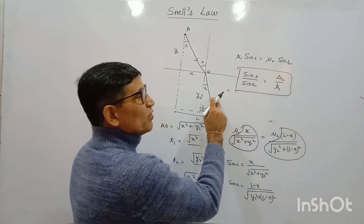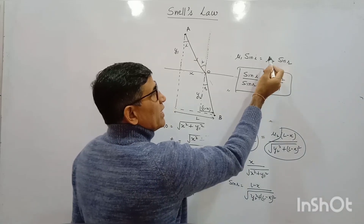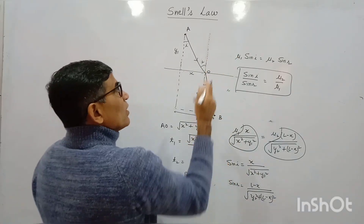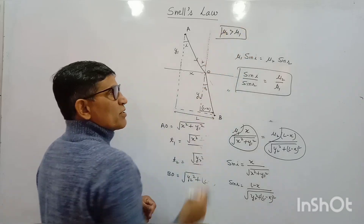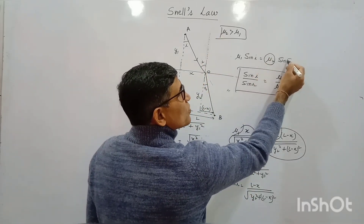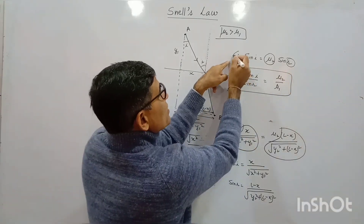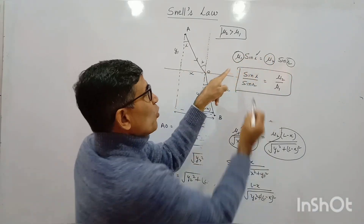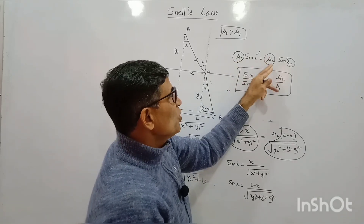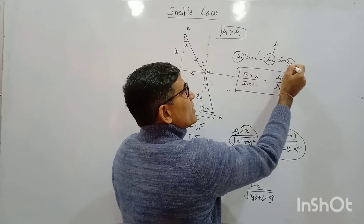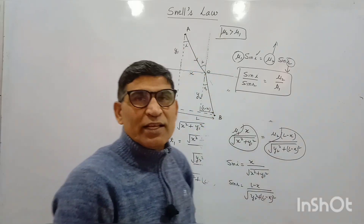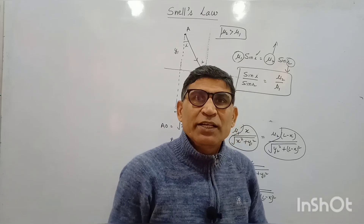Here μ2 is the refractive index of the second medium. If μ2 > μ1, the medium is denser and light slows down more, so angle R must be smaller than I — the light bends toward the normal. If μ1 = μ2, then I = R and light goes straight. This is why light must bend towards the normal to minimize travel time. I hope this clears your doubt. Thank you.